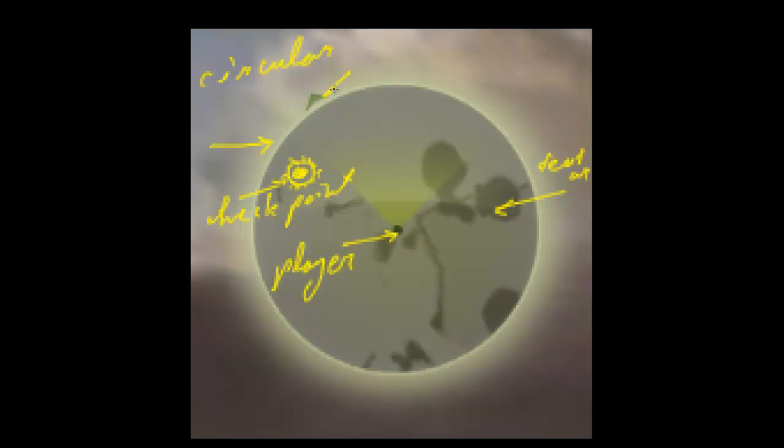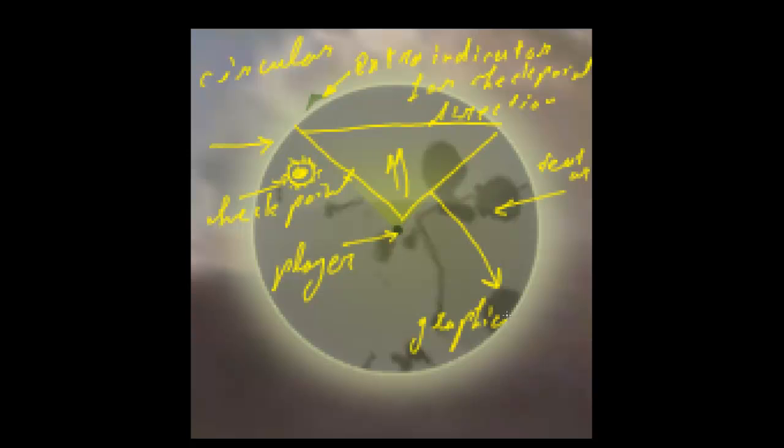Now what else do we have? This is our texture, and this is an extra indicator for checkpoint direction. And we have some kind of cone shape here with some gradient going on and it's just the graphical design for forward direction.